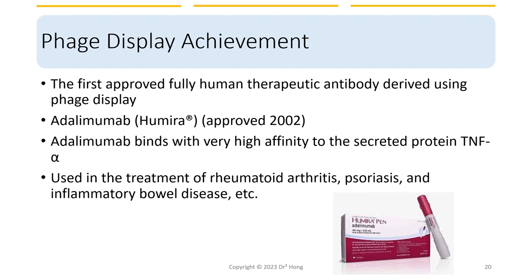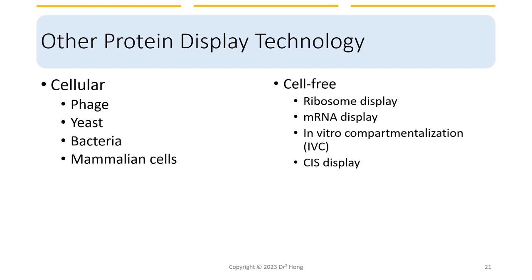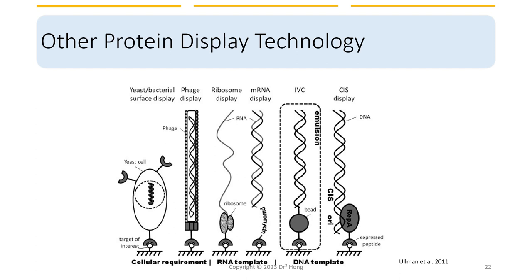In addition to phage display, there are several cellular and cell-free display technologies that have been developed for the generation and screening of large protein libraries with specific binding properties. In bacterial display, a library of proteins is expressed on the surface of bacterial cells, typically using outer membrane proteins. The proteins can be screened for binding to target molecules by fluorescence-activated cell sorting (FACS) or magnetic-activated cell sorting.